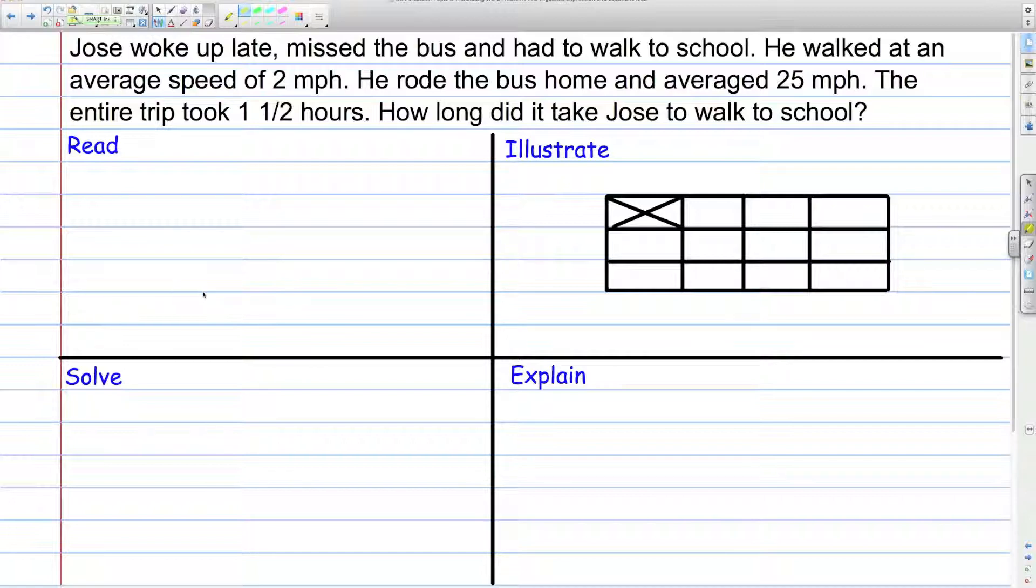Here's the first problem we're going to take a look at using the RISE method to solving problems. First, we have to read the problem. Then we're going to fill in some information here. So let's read. Jose woke up late, missed the bus, and had to walk to school. He walked at an average rate of 2 miles per hour. He rode the bus home and averaged 25 miles per hour. The entire trip took one and a half hours. How long did it take Jose to walk to school?